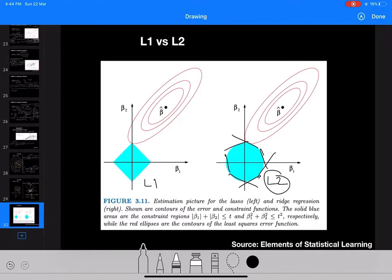Now in L1 regularization on the left hand side, what will happen is this red contour will have a unique tangent for every possible value of the loss function.